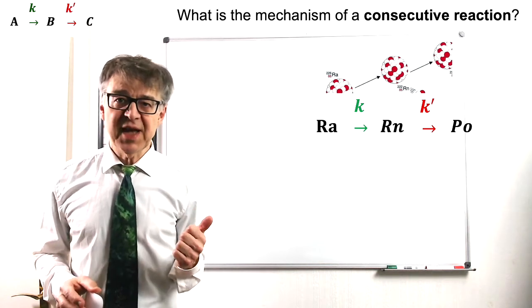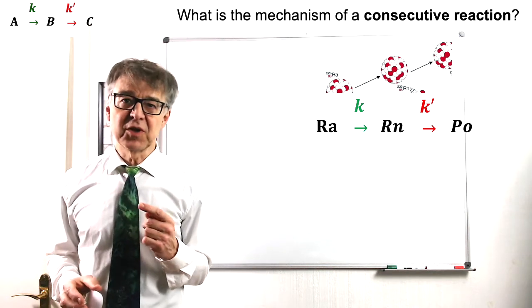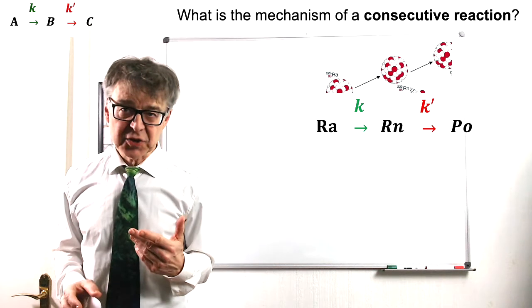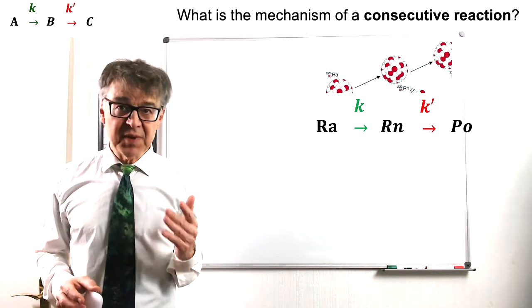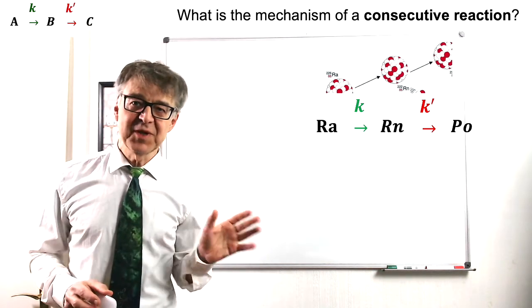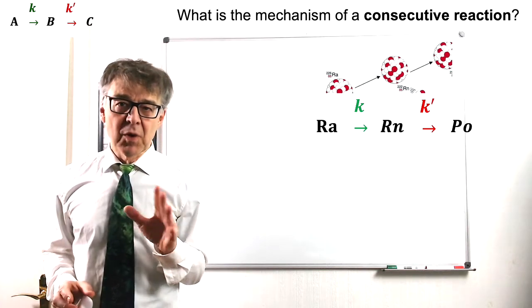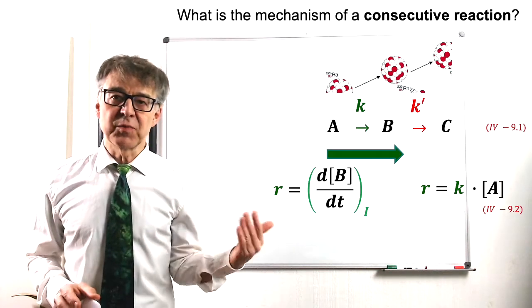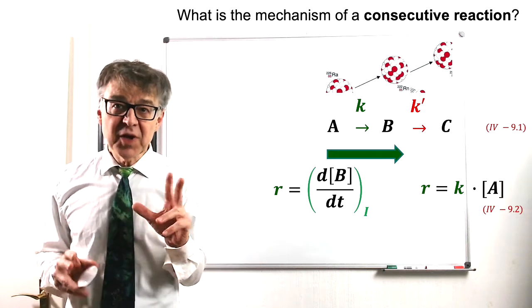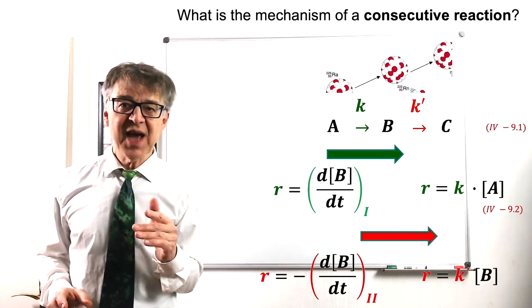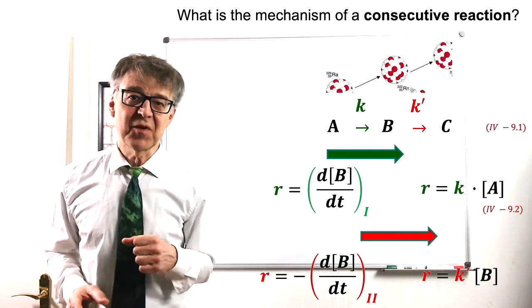In the decay chain series of uranium, radium decays into radon and this decays further into polonium. This is an example of a consecutive reaction. Radon is the intermediate that forms in the green reaction and decomposes in the red reaction. More generally formulated, A goes to B goes to C. The green reaction is the source for the intermediate B and the red reaction is a sink for the intermediate B.